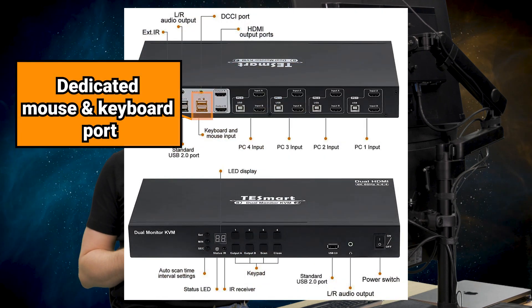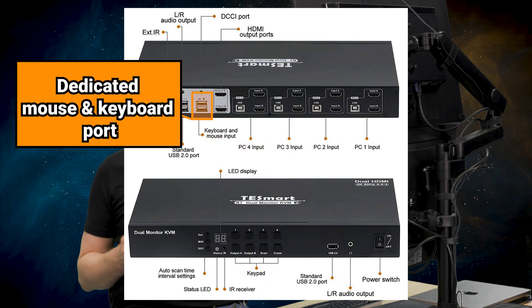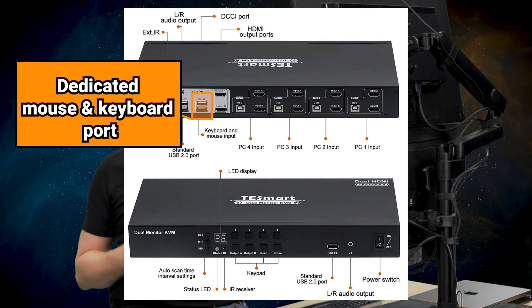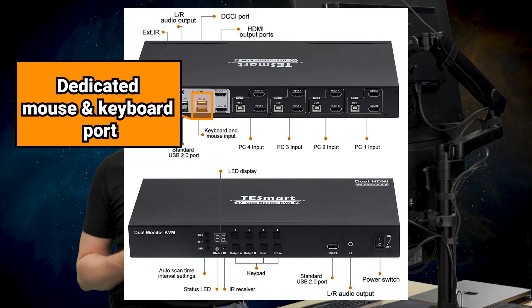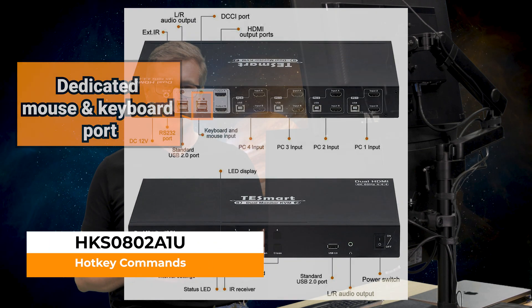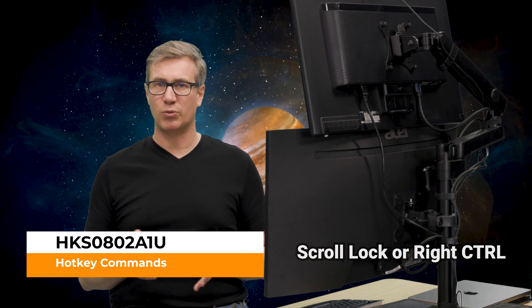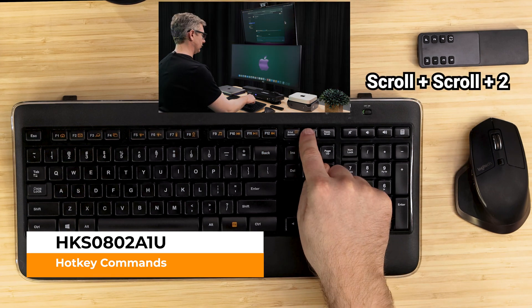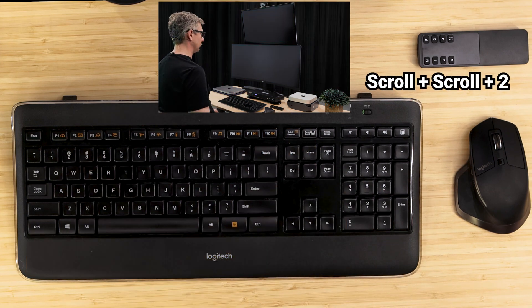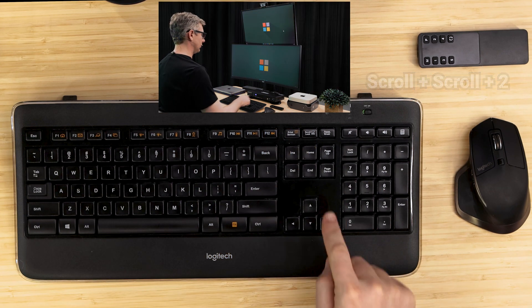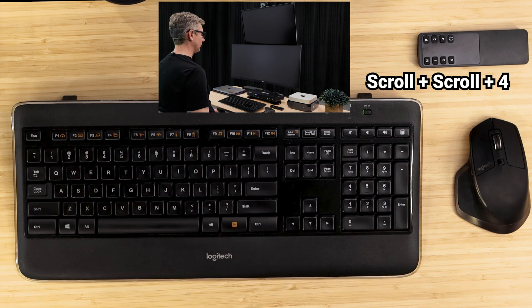Now let's talk about the hotkey functionality. To take full advantage of this feature, make sure your keyboard is plugged into the dedicated mouse and keyboard ports. You can use wired or wireless devices — it doesn't matter. These ports use emulation to intercept and convert keystrokes into hotkey commands. So by using scroll lock or the right control key, you can easily switch inputs with just a few key presses. For example, scroll scroll 2 will take you to computer 2, and scroll scroll 4 will take you to computer 4.